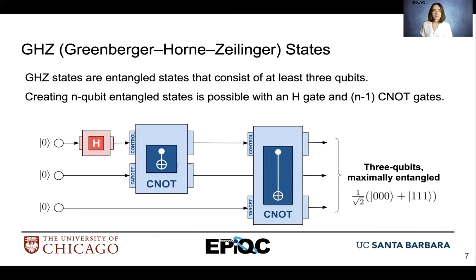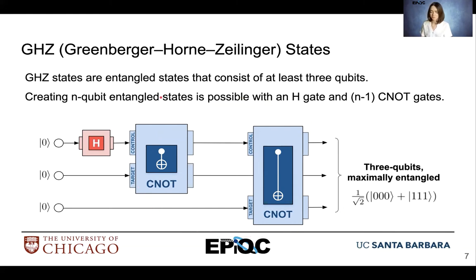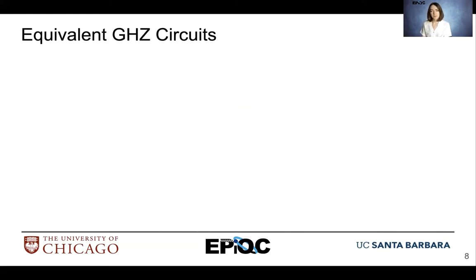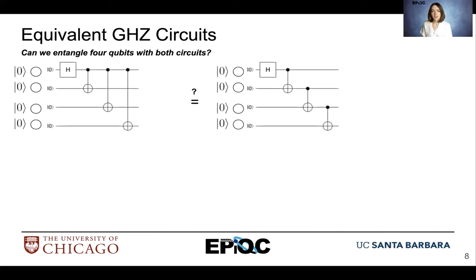Let's define the GHZ state. GHZ stands for Greenberger-Horne-Zeilinger. GHZ states are entangled states that have at least three qubits. If you want to create an N-qubit entangled state, it's possible to do so with one H gate and N minus one CNOT gates. So in the case of three qubits, we have one H gate to create superposition and then two CNOT gates applied. There are other ways to implement the GHZ circuit — let's check it out.